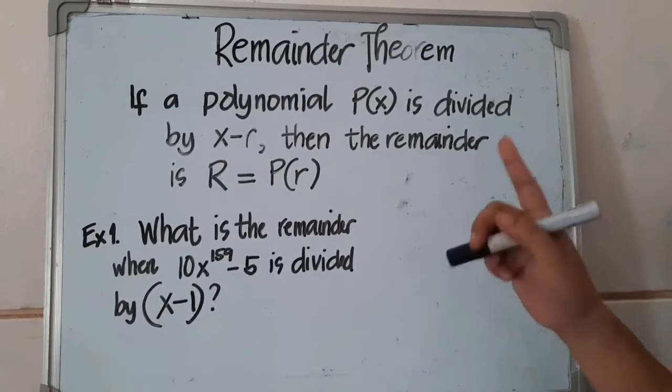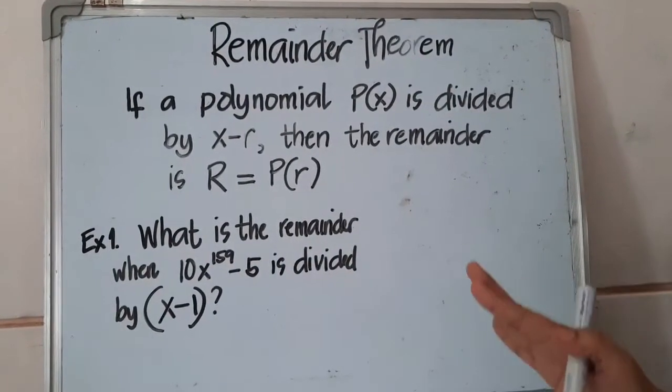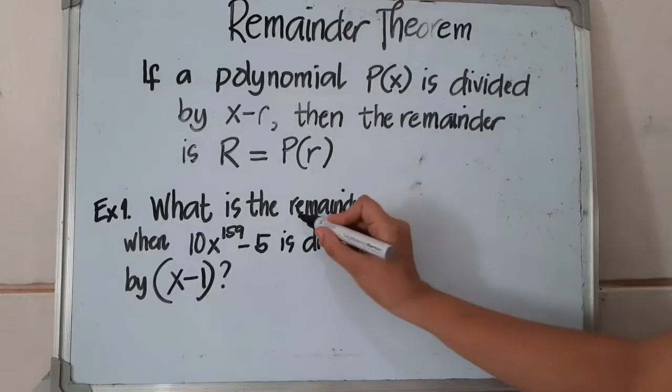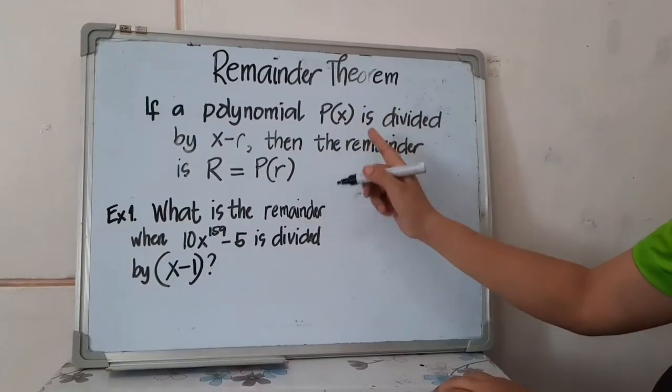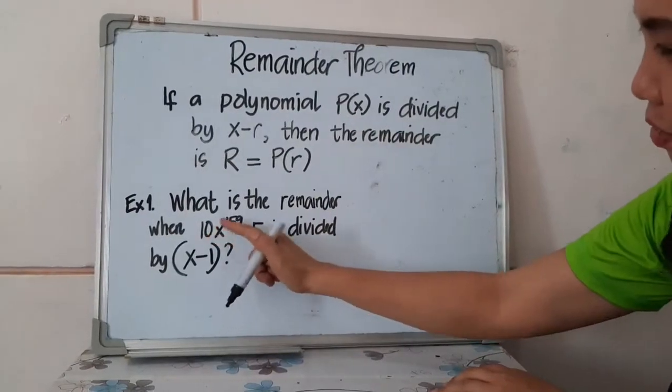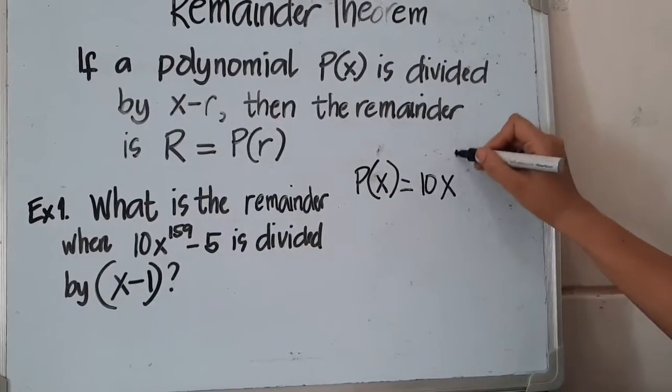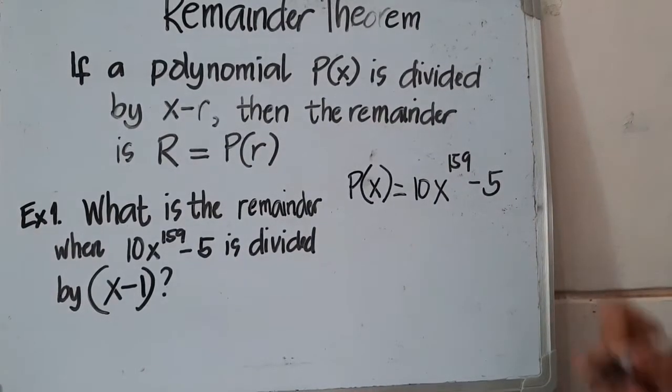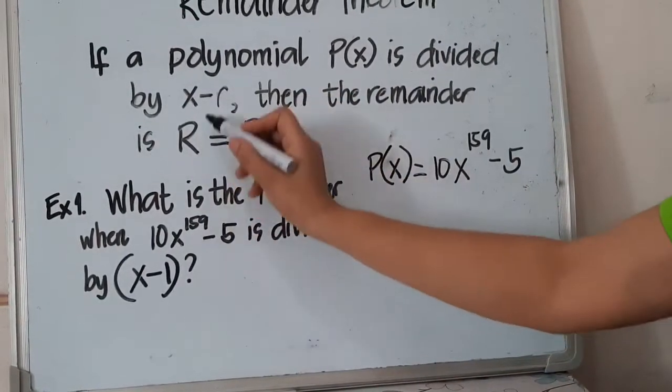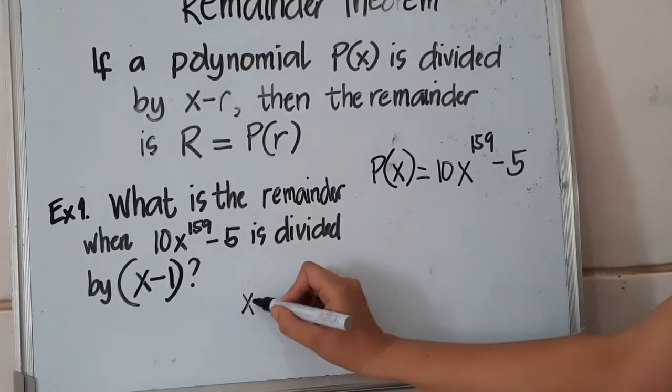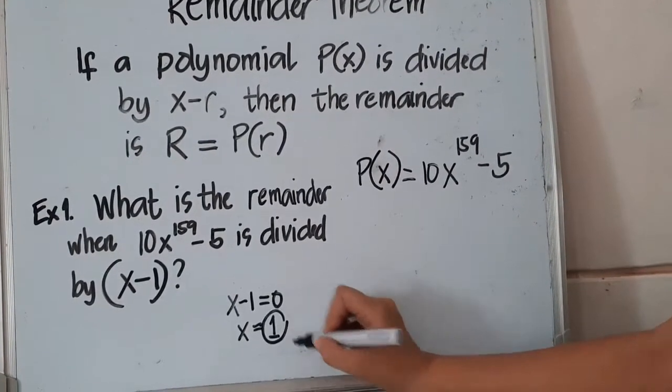Take note, our exponent is very large. And since it doesn't ask for a quotient, it only asks for the remainder, then this is the time that we are only going to use the remainder theorem. So this is how we do it. Our P(x) will be our dividend. So P(x) is equals to 10x raised to the power of 159 minus 5. And our (x-1) will be our divisor, which is x minus r. So to get our r, we have to get our divisor. So x minus 1 equal to 0. So x is equals to positive 1. So our r is positive 1.